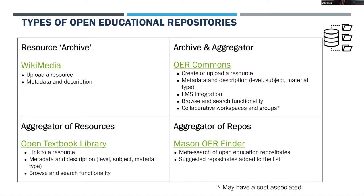Resource aggregators collect metadata from resource archives or resources on other websites. Searching in this repository provides you with metadata and links to content housed elsewhere — it doesn't actually host the object itself, just the metadata and a link to find it. These are helpful when looking for subject-specific resources, but metadata must be entered correctly and completely, otherwise content might not be found. An example is the Open Textbook Library, which provides a space for the metadata and a link to where the object sits.